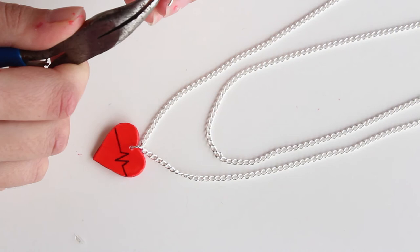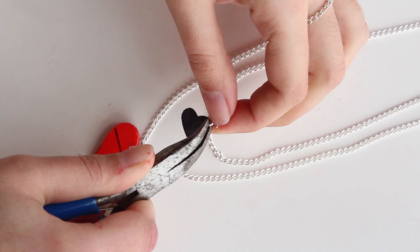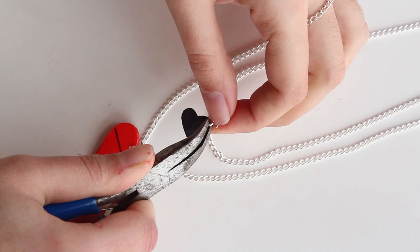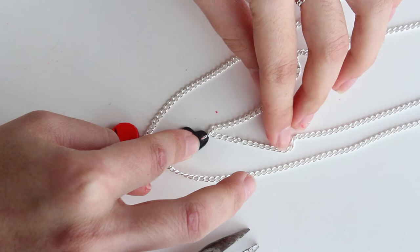I also really wanted to try turning this pendant into a layered necklace, so I just added another layer of chain and a small black heart made with the same cardboard. I really like how it turned out.